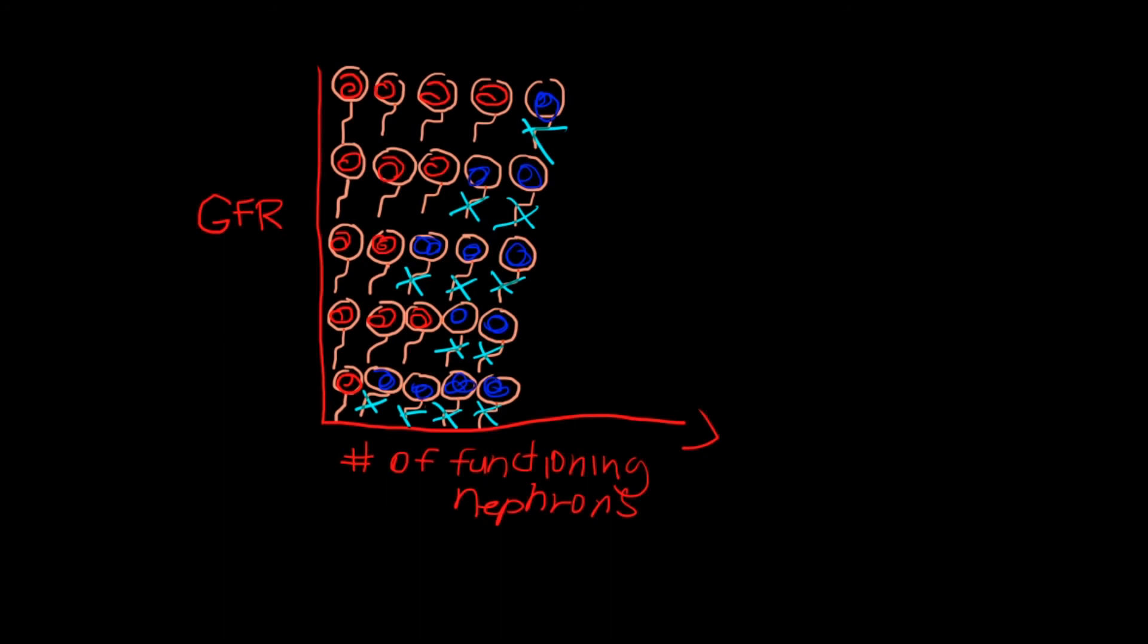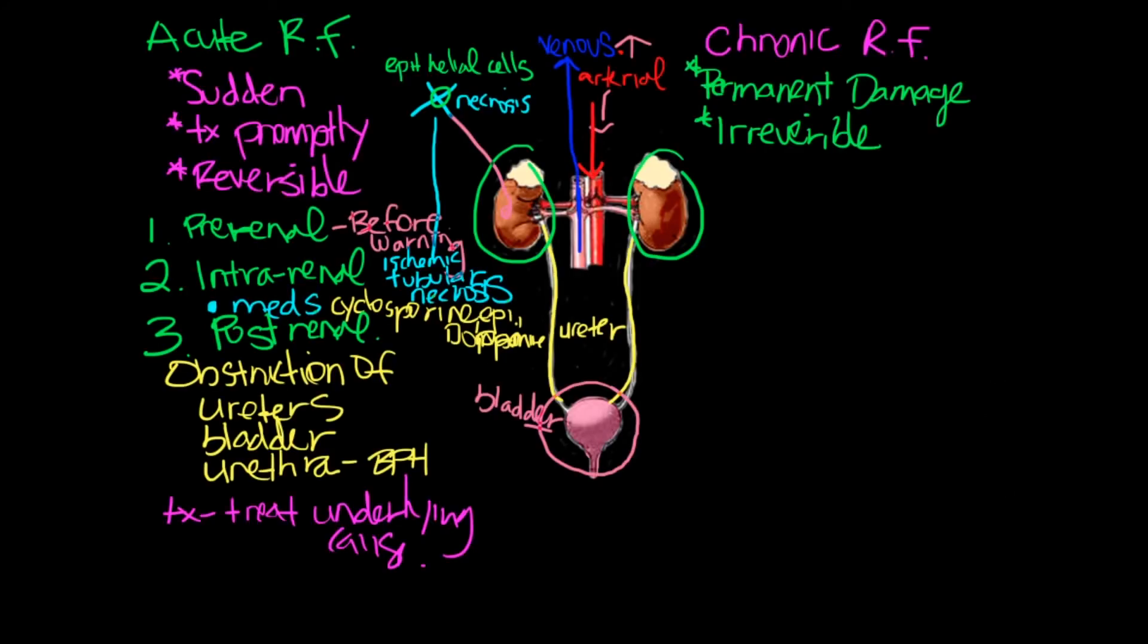So as nephrons are destroyed and those that are functioning have to pick up the slack to help compensate. So because nephrons filter more solute, which causes more water to be lost in urine, some of the early signs of renal failure is polyuria. So some of these patients can start having symptoms with renal failure. So they may depict the symptom as polyuria. So they're peeing a lot.